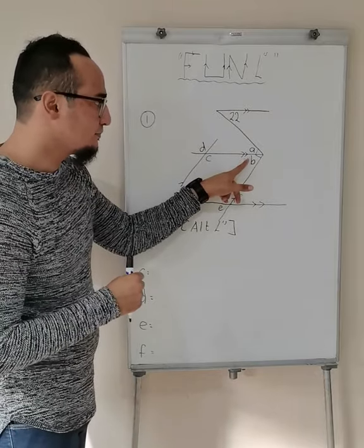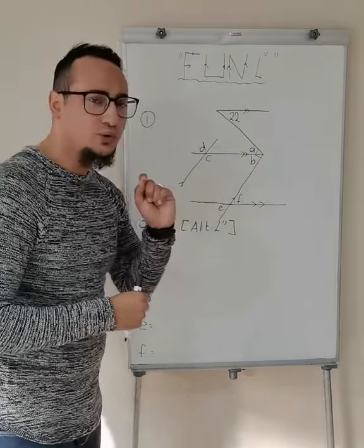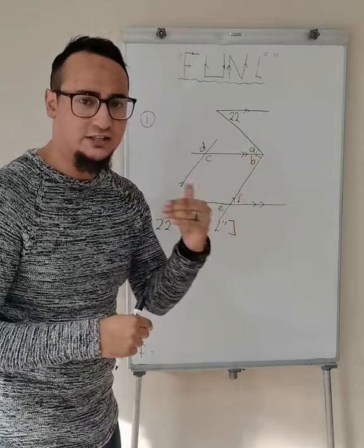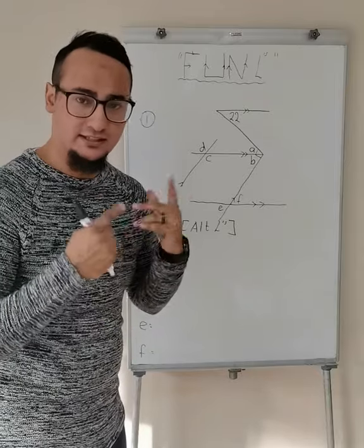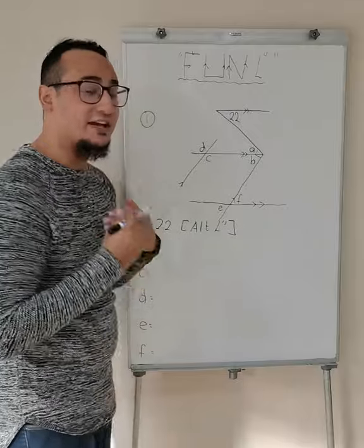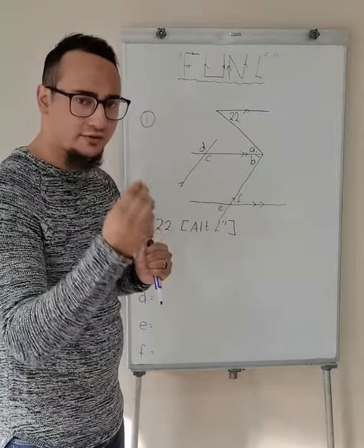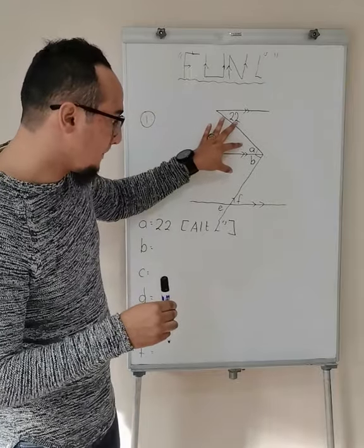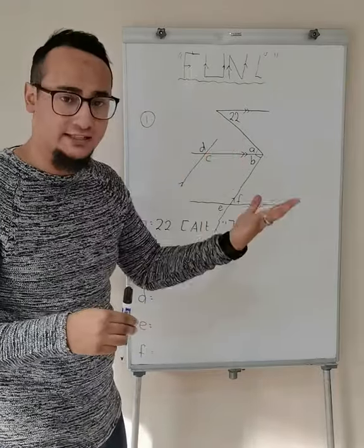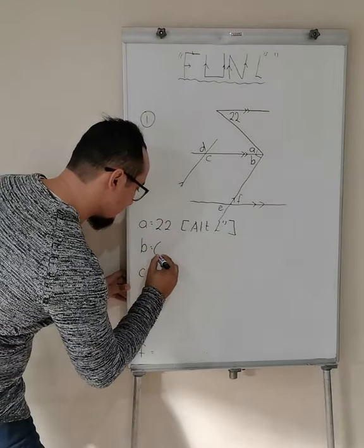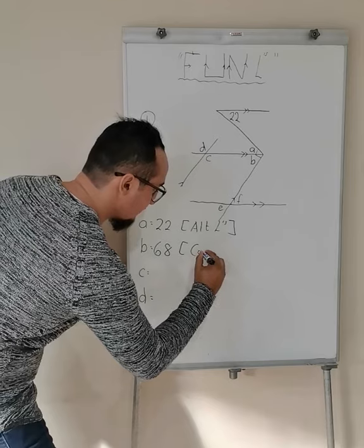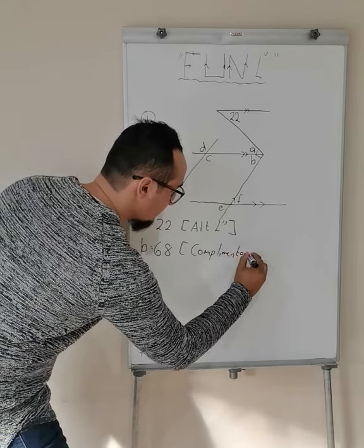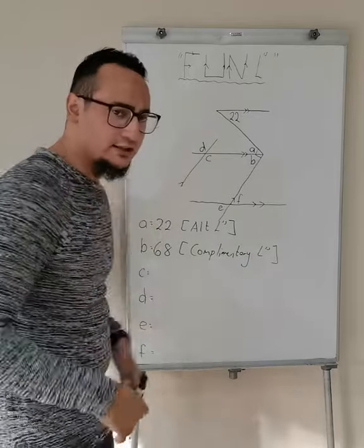Now B is on this angle. Notice that B and A together are 90 degrees — in other words, they are complementary. What tells me that it is 90 degrees? That little square over there, and that is 90. So if A is 22, then 22 plus what gives me 90? B is basically equal to 68 degrees. The reason is complementary angles equal to 90 degrees.